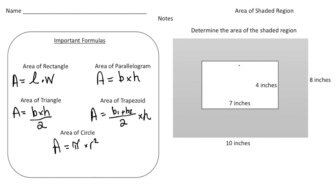Let's take a look at this first problem. It says determine the area of the shaded region — I want to know the area of the gray part of this image, not the white in the middle, just the gray part. If you imagine taking the whole image and cutting out the white rectangle in the middle, what's left over is the part we want. So I need to subtract the area of the inside rectangle from the entire big rectangle.